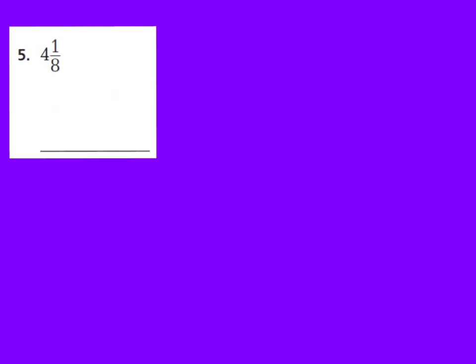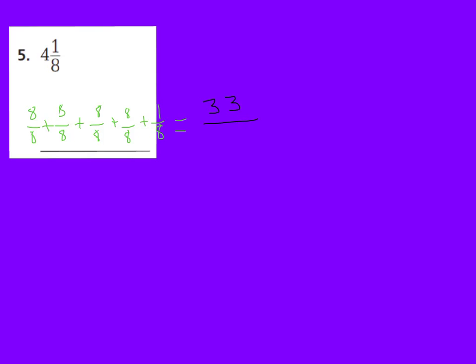Let's look at number 5. I have 4 and 1 eighth as my mixed number, and I need to change that to an improper fraction. I have 4 wholes out of eighths. So 1 whole is 8 eighths, and I have 4 of those: 8 eighths plus 8 eighths plus 8 eighths plus 8 eighths, then I add my 1 eighth. So 8 times 4 is 32, and 32 plus 1 is 33. I keep my denominator as 8, giving me 33 eighths.